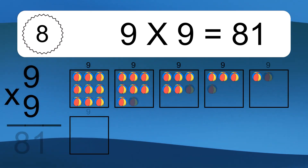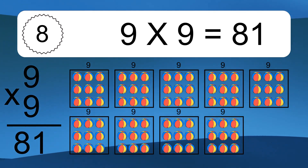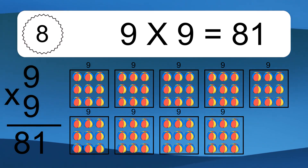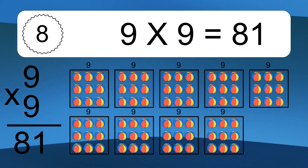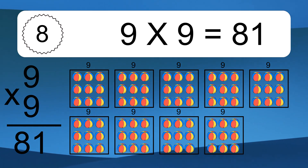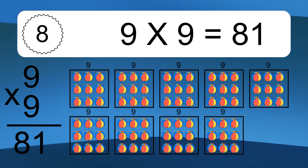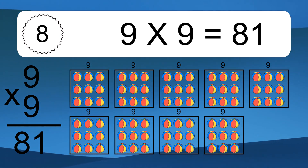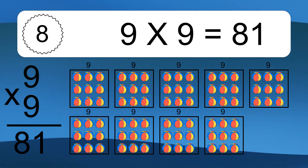9 times 9 equals 81. We have 9 boxes and each box has 9 colorful balls inside. If you count all the balls in all the boxes together, you will have 9 times 9 balls. This equals 81 balls.